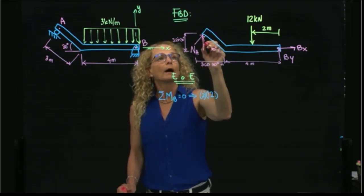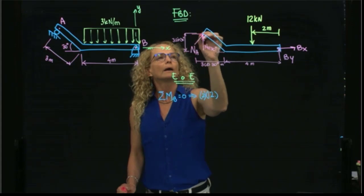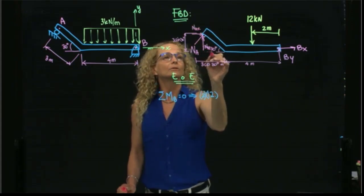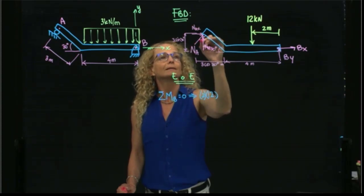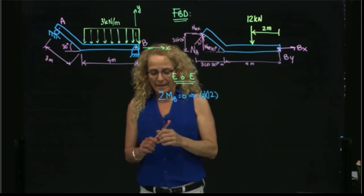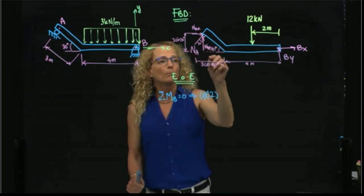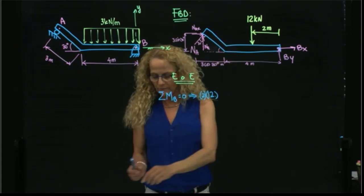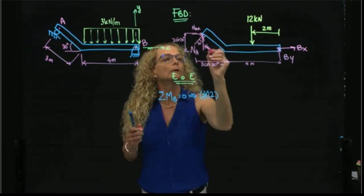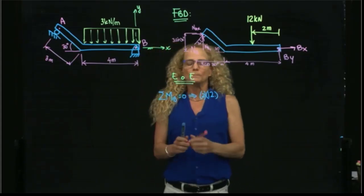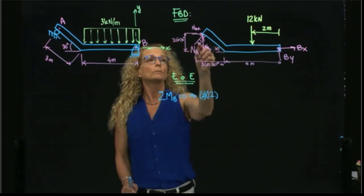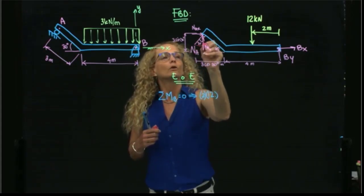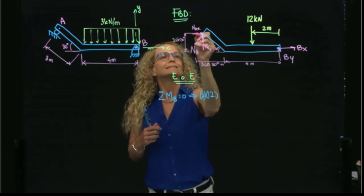Now, the other force that I have is the reactive force at A. I have a vertical component and a horizontal component. Since this angle is 30, this angle is 60, and this angle here is 30 again. Therefore, my component... let me draw it more clearly. This is the Y component, and this is 30 degrees. So my Y component will be NA cosine. This is a triangle, so this will be cosine, and this will be sine.